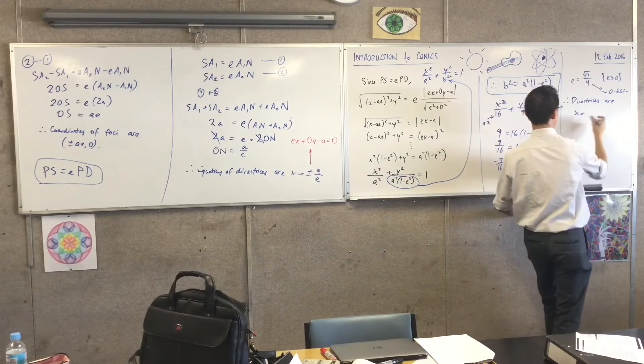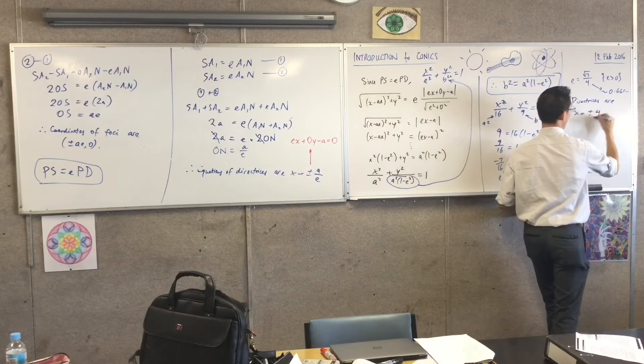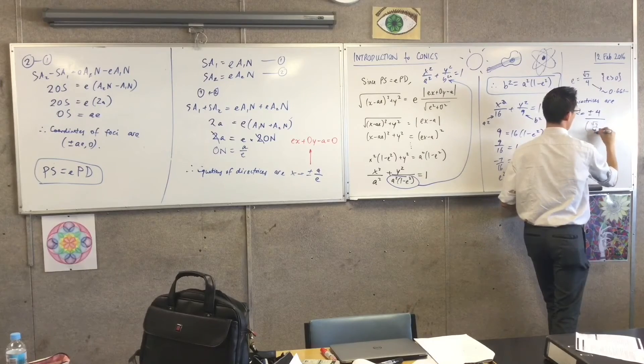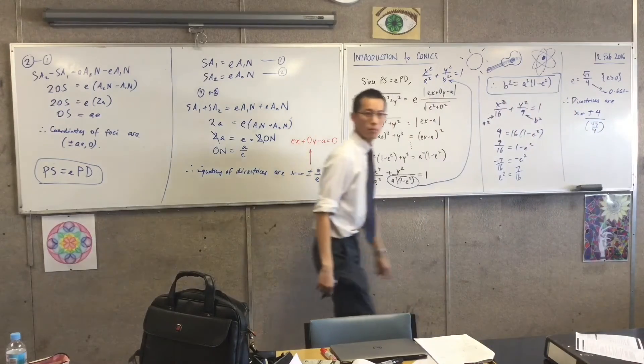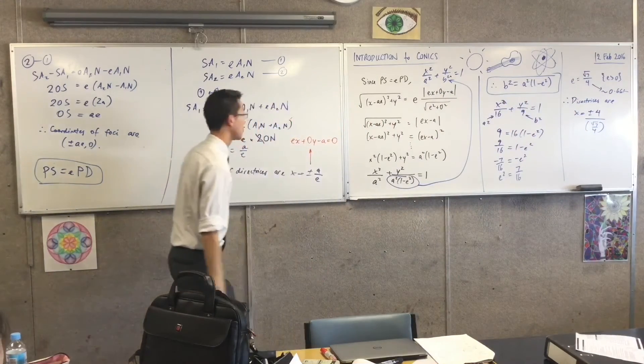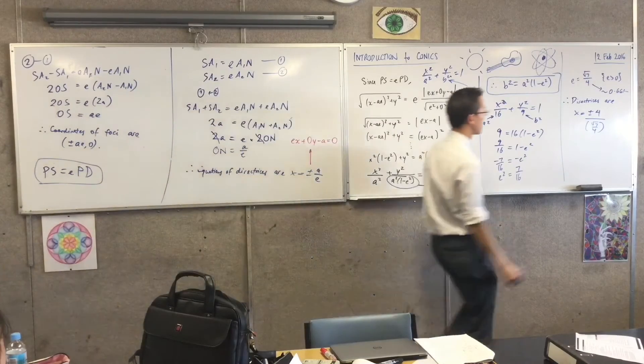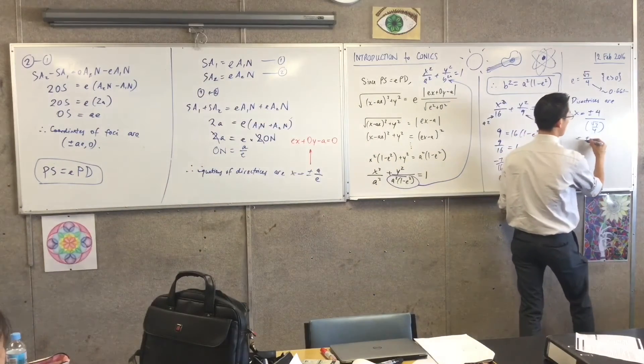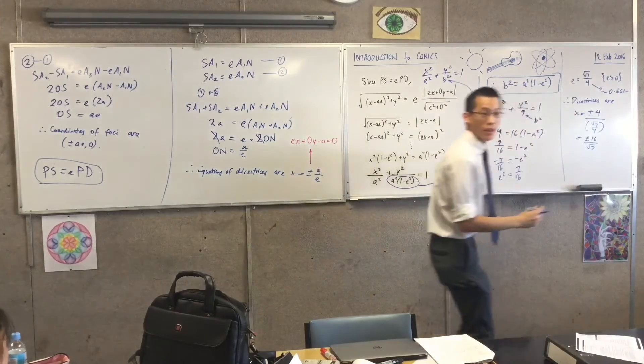x equals plus or minus 4 divided by root 7 on 4. Did I do it right? It's interesting. It's on the bottom. Yep. So I'm going to get that, looks to be like plus or minus 16 on root 7.